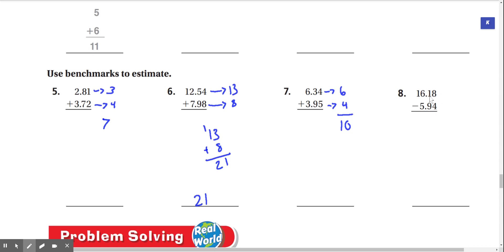Number eight, 16.18 minus 5.94. Well, 16.18 on a number line is really close to 16, and 5.94 is really close to 6 on a number line. So we subtract those. 16 minus 6 is 10.